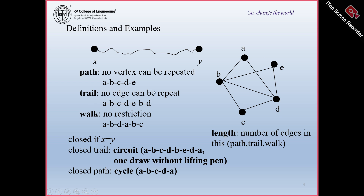A trail is nothing but no edge can be repeated. For example: A to B, B to C, C to D, D to E, E to B, and B to D. Here no edge is repeated but the vertices are repeated — that is called a trail. Every path is also a trail but every trail need not be a path.